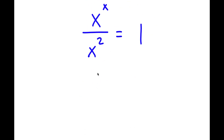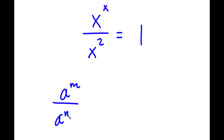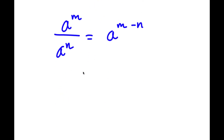If I have something in the form a to the power of m over a to the power of n, this is equal to a to the power of m minus n. So in this case, x to the power of x over x to the power of 2 can be rewritten as x to the power of x minus 2, and this is equal to 1.